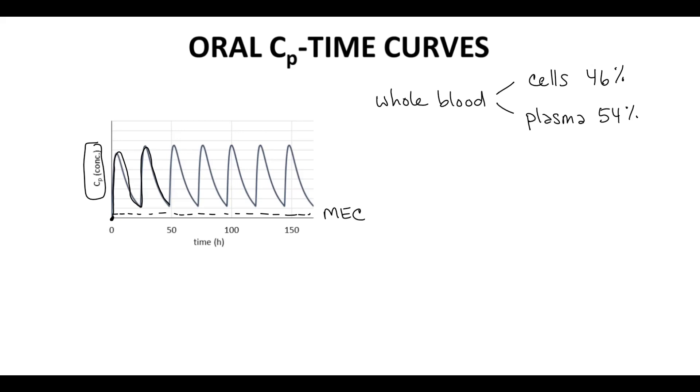The upper boundary is called the maximum tolerated concentration, or MTC. Above this value, the patient will experience excessive adverse drug reactions. This range is called the therapeutic window.